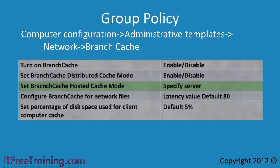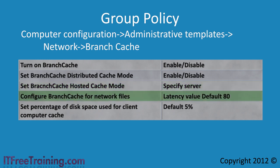The next setting, Configure Branch Cache for Network Files, determines the latency time that will be used with Branch Cache. The default is 80. Remember, this setting is the round trip value — that is the time taken from the client computer across the WAN and back again. If you want to enable Branch Cache to always operate, set this value to 0. If you want to stop Branch Cache from operating, set the value really high.